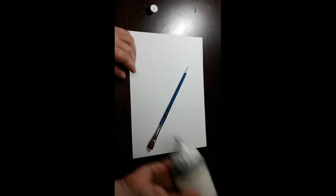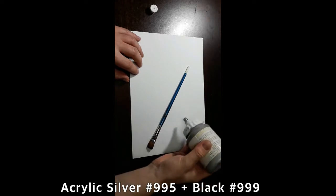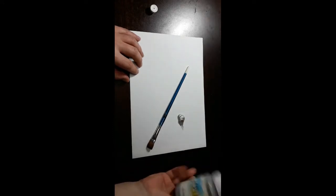A good friend of mine once asked me, how do you make pewter? Well, this is silver paint here. This is a 995 that I'm using right now. This is an acrylic.